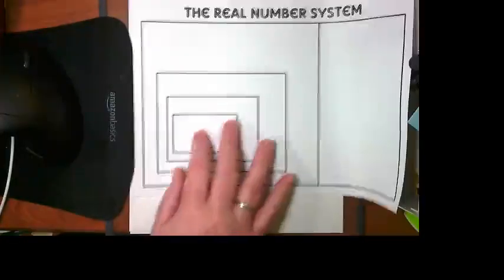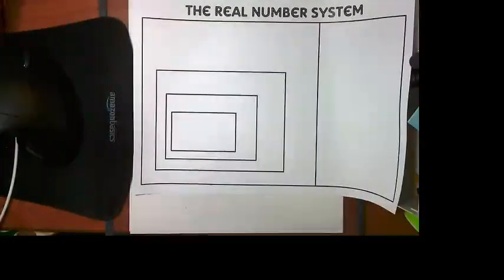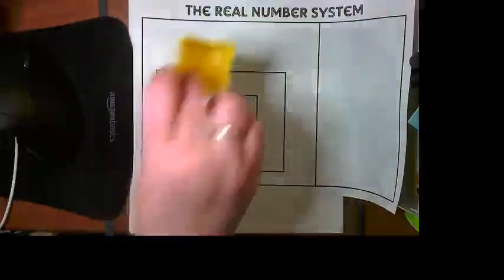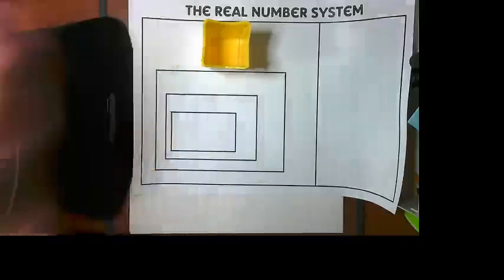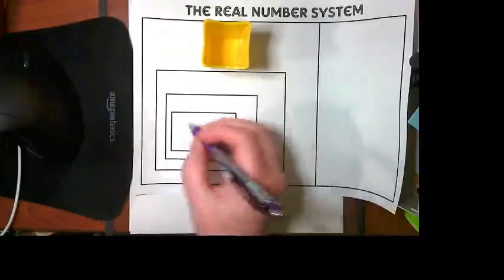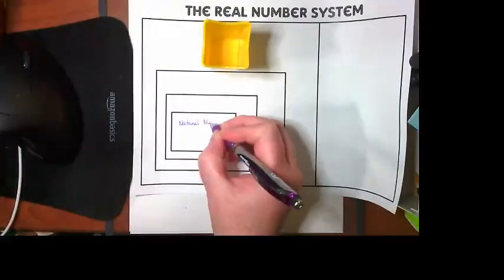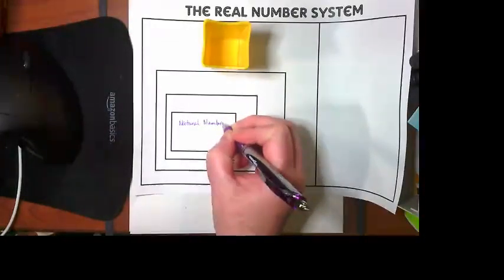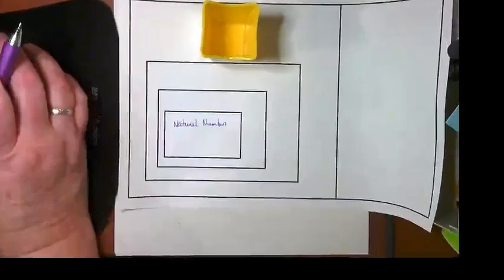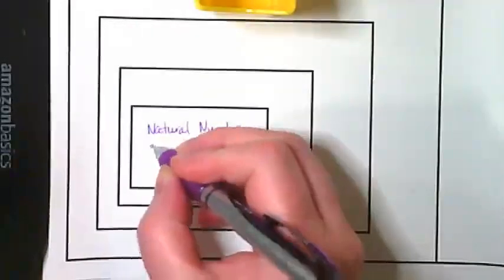We're going to start with this side here. And the smallest box is represented here by my little yellow box. And it is what we call the natural numbers. These are also known often as the counting numbers. That's like a nickname.